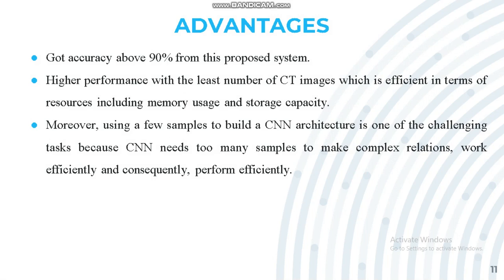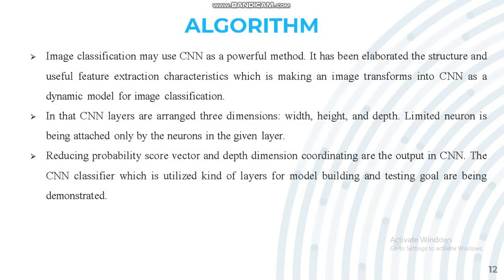Advantages of our proposed system: we achieve 90% accuracy from this proposed method. It works with a least number of CT images with higher performance, including efficient memory usage and storage capacity. CNN needs enough samples to make complex relations work efficiently. The algorithm we are using is a Convolutional Neural Network (CNN), which transforms images into a dynamic model for image classification.